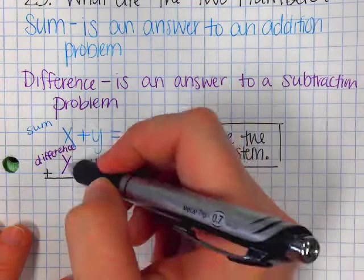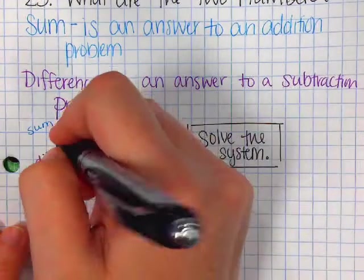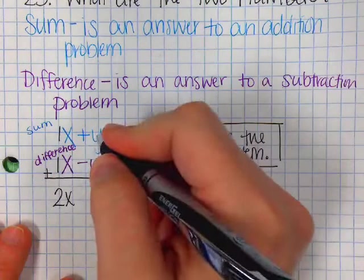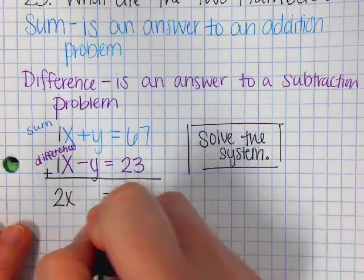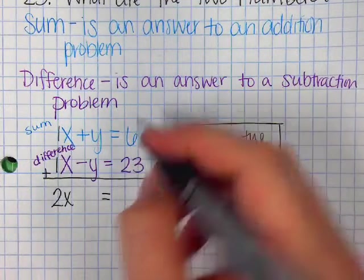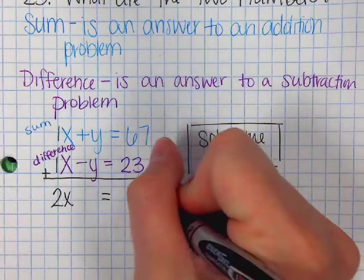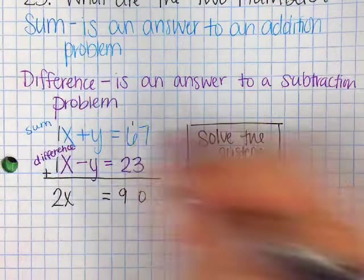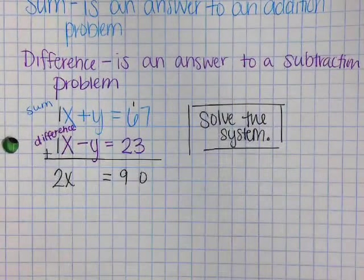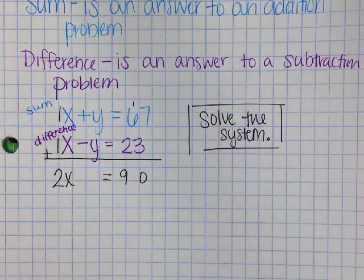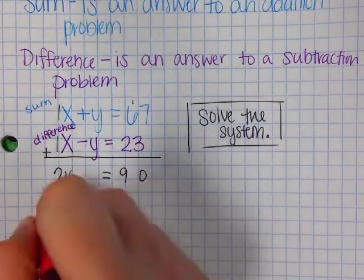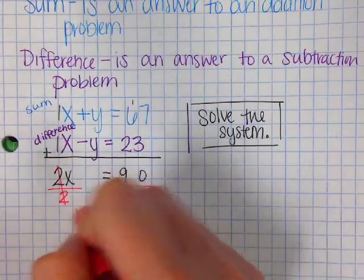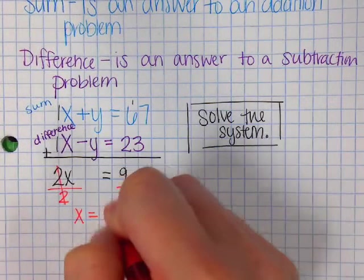So x plus x, remember that's 1x plus 1x, so that's 2x. y minus y cancels, bring down your equal sign. 67 plus 23, 7 plus 3 is 10, carry the 1, so that's 90. Okay, then divide by 2, divide by 2, x equals 45.